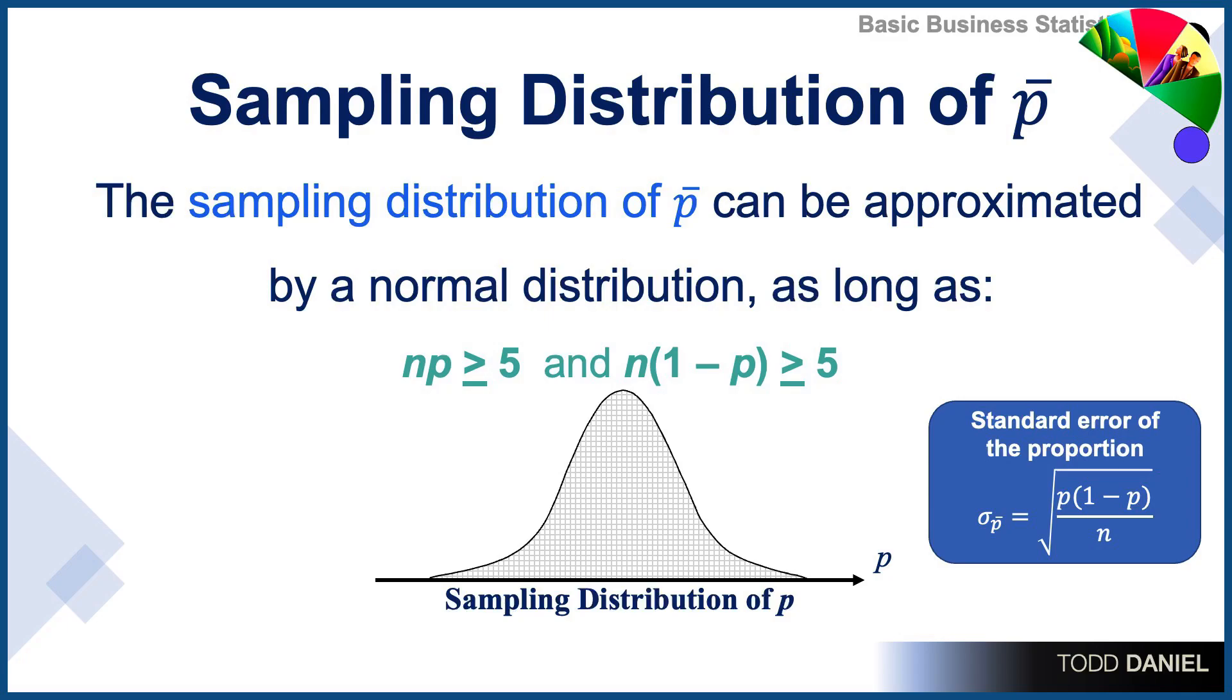A sampling distribution of the proportion can be approximated by a normal curve, as long as sample size times population proportion is greater than or equal to 5, and sample size times 1 minus the population proportion is greater than or equal to 5. And you can note the standard error of the proportion formula in the lower right.